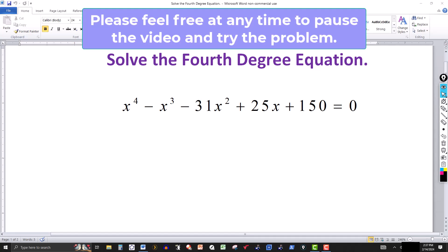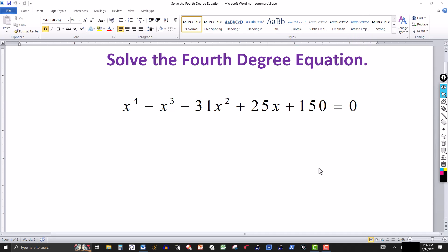So what we're going to do here is apply the rational zeros theorem. Now if this were a second degree equation we could use the quadratic formula, the method of completing the square, or in some cases we could just factor. So this is fourth degree. What we want to do is find some zeros of the left side by trial and error and factor it.